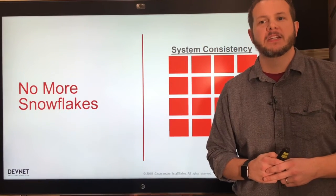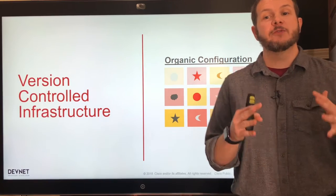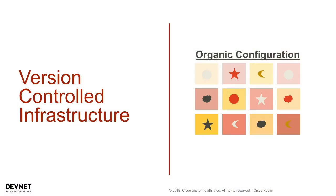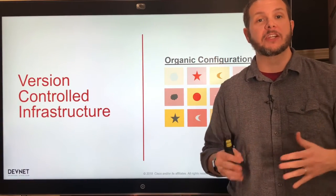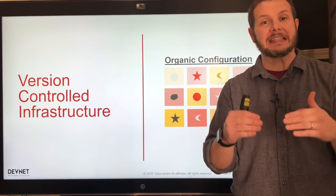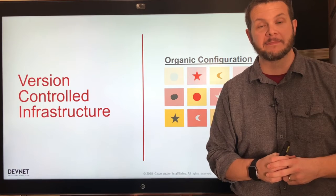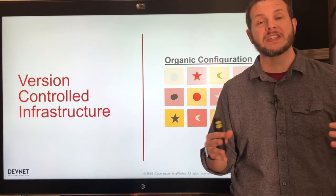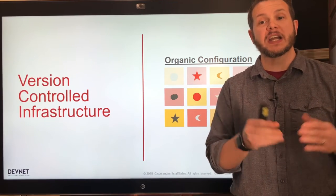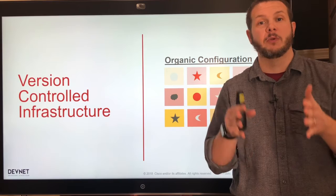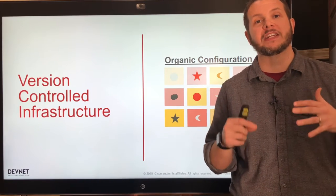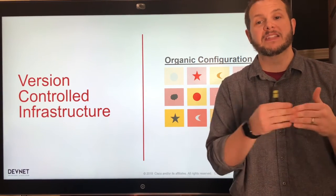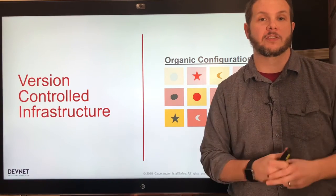Our last benefit is version controlled infrastructure. Today's infrastructure is what I like to call organically configured. The exact configuration we expect in our network — the only place we know that is by looking at the actual network. If we take a site configured two years ago, it was configured based on whatever the standards were at that time by the engineers who configured it, and it may not have been touched since. Sites deployed two years ago are different from those deployed 18 months ago, 12 months, six months. That's organic configuration — we don't have a good understanding of what our network configuration is supposed to be because it's all evolved over time.